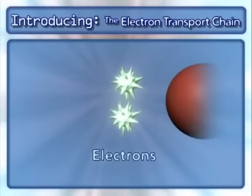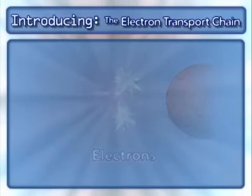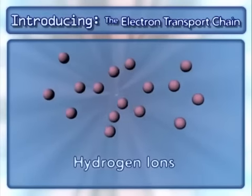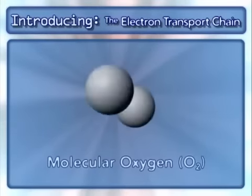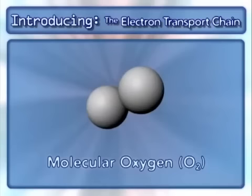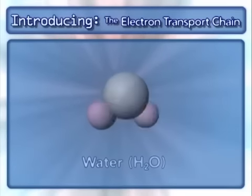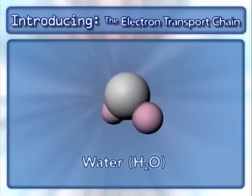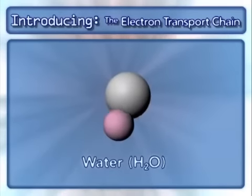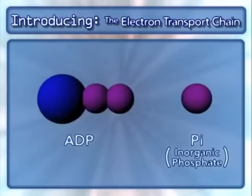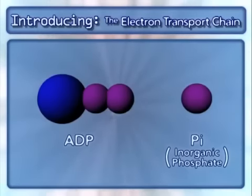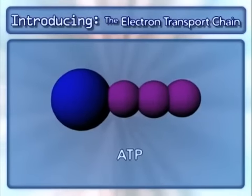The inputs include NADH and electrons made in the Krebs cycle, hydrogen ions, molecular oxygen, and water. ADP and inorganic phosphate combine to form ATP.